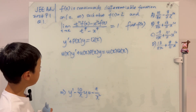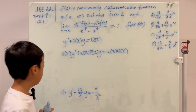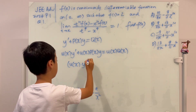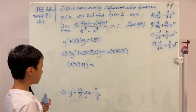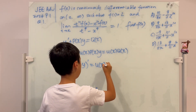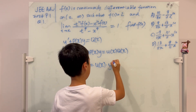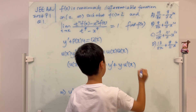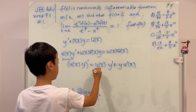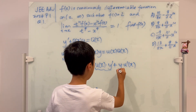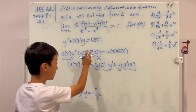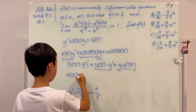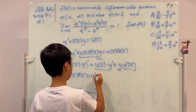Think back to the product rule. The derivative of u(x)·y is: u(x)·y' + u'(x)·y. Looking at our equation, for the left-hand side to match the product rule, we need u(x)·P(x) = u'(x).